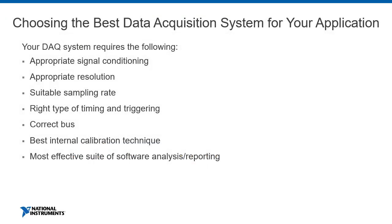When choosing the best data acquisition system for your application, consider the following. Start with the source of your signal — if you're using a sensor, consider the signal conditioning required for its electrical characteristics. The quality of measurement is only as good as the DAQ device you're using, so ensure it offers the resolution, rates, and range for your expected signal, as well as the right bus — such as PCI, USB, etc. — that fits the needs of your application.